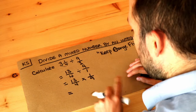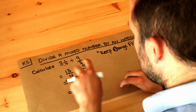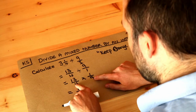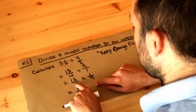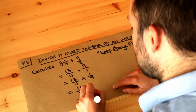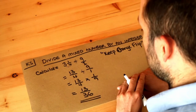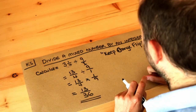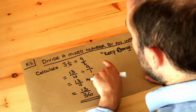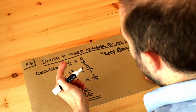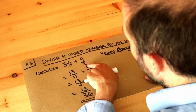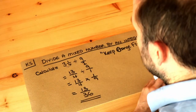Now we multiply the numerators: 13 times 1 is 13, and we multiply the denominators: 4 times 9 is 36. So the final answer is 13 over 36. To summarize: if you have a whole number or integer in a division or multiplication of fractions, just make that whole number over 1 and that solves your problem.